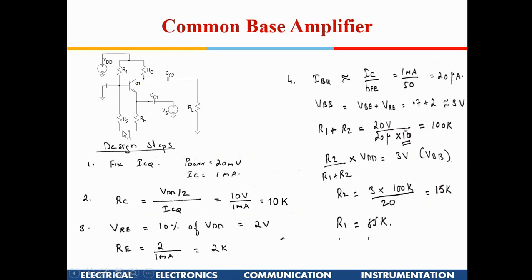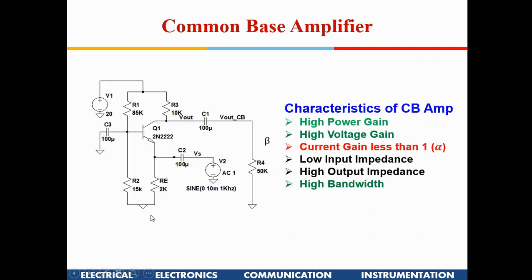For stability, at least 10 times IB should flow through the voltage divider R1 and R2. So R1 + R2 = 20 V / (10 × IB) = 100 kΩ. With VBB = 3 V, applying the voltage divider formula gives R2 = 15 kΩ and R1 = 85 kΩ. This completes the bias design for the CB amplifier.